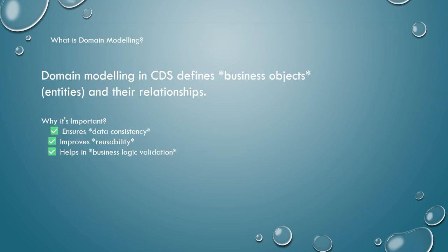Before adding our business logic we need a data structure, and that is where domain modeling comes in. Domain modeling is about defining business objects — here we define entities and their relationships, including associations and deep entities.